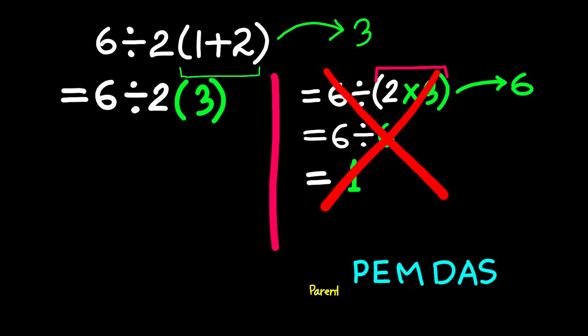P stands for parenthesis, E stands for exponents, M and D stand for multiplication and division, and A and S stand for addition and subtraction.